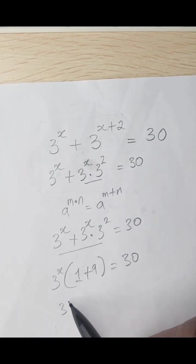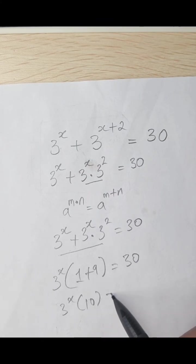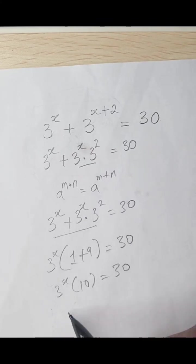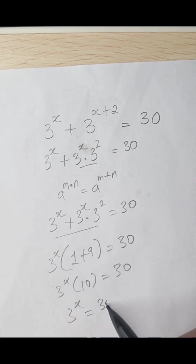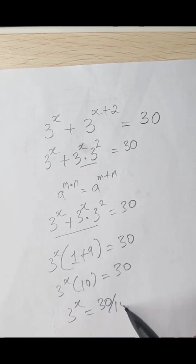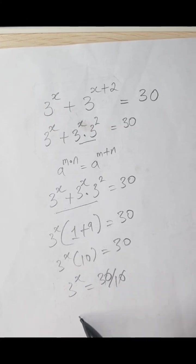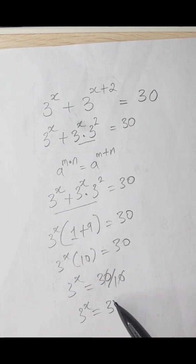So now we have 3 times 10 equals 30. 3 raised to the power x is equal to 30 divided by 10, which equals 3.